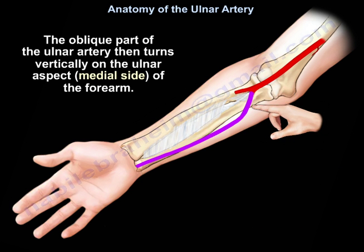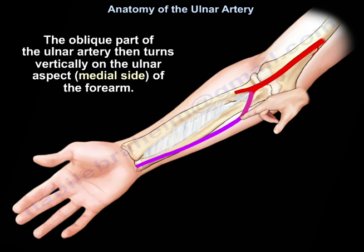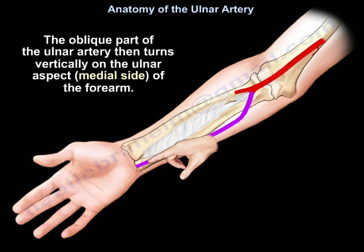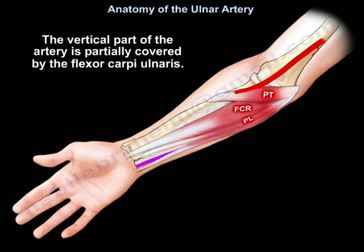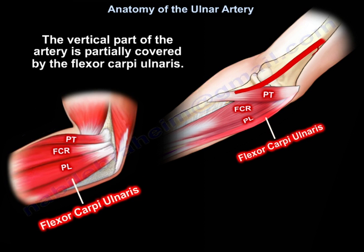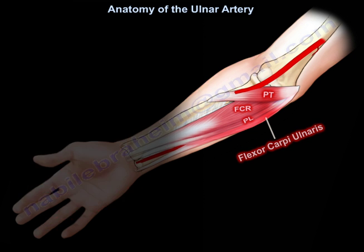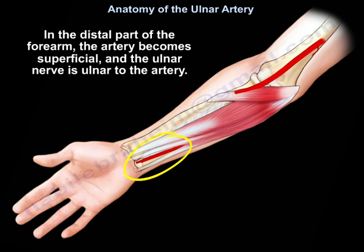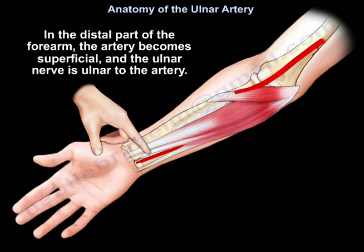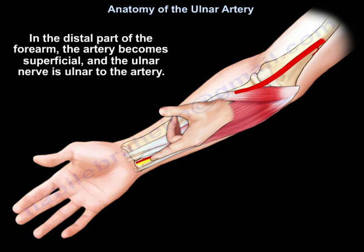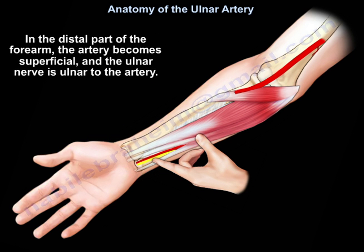The oblique part of the ulnar artery then turns vertically on the ulnar aspect of the forearm — the medial aspect. The vertical part of the artery is partially covered by the flexor carpi ulnaris. In the distal part of the forearm, the artery becomes superficial and the ulnar nerve is ulnar to the artery.